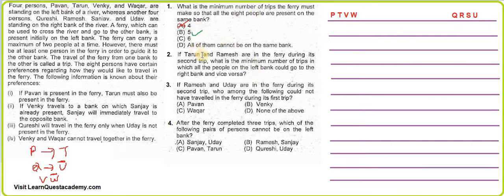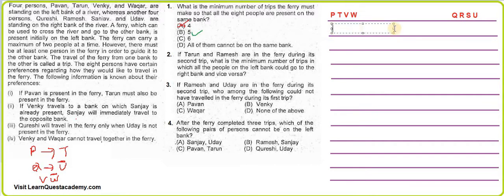The second question: if Tarun and R are in the ferry during the second trip, what is the minimum number of trips for all people on the left bank to go to the right, and vice versa? The second trip goes right to left, meaning T and R are coming from right to left. So in the first trip, T must have traveled from left to right.